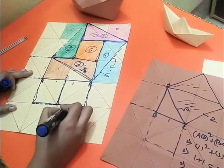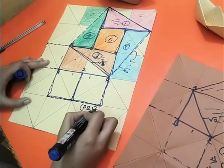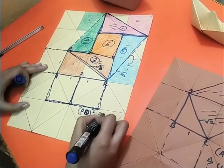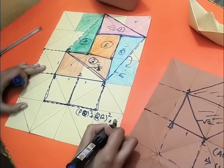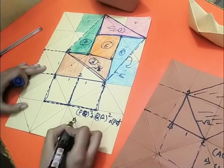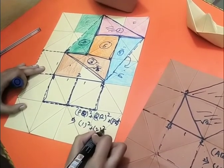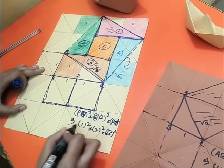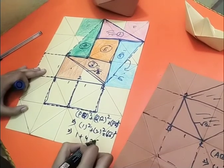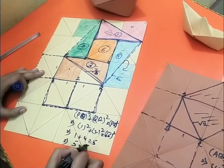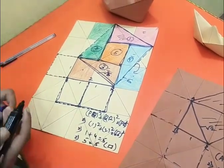Now let us put all these values in Pythagoras' theorem, and we can see that the theorem is proved. So from these examples, we can tell that we can prove Pythagoras' theorem with the help of origami. Similarly, we can prove algebraic identities and many other theorems of mathematics with the use of origami. Moreover, through origami, we can learn mathematics in a very enjoyable manner. Thank you.